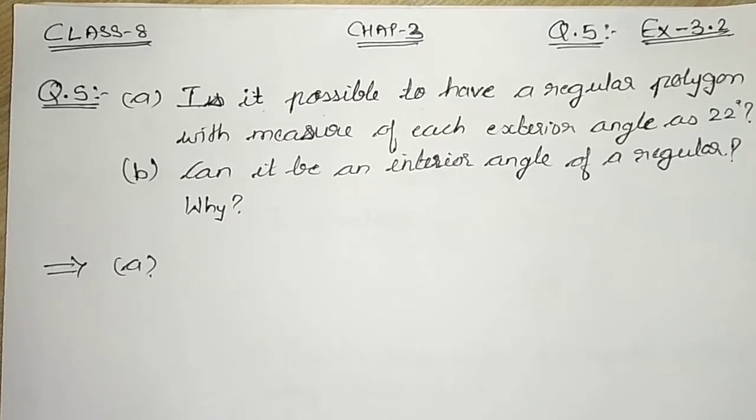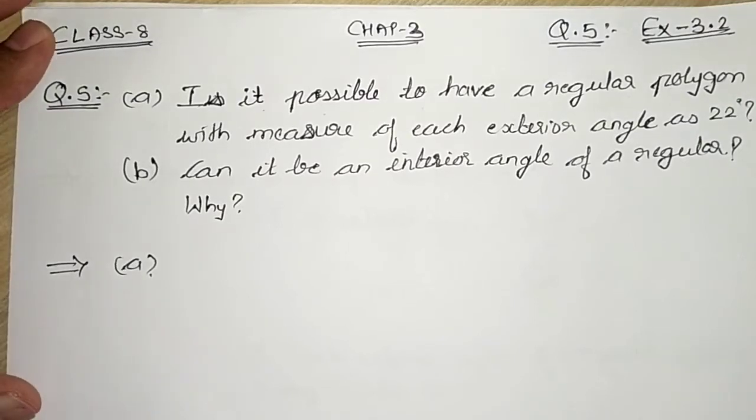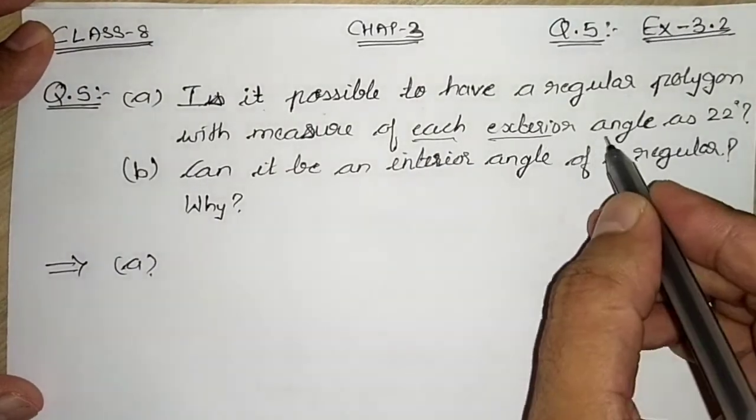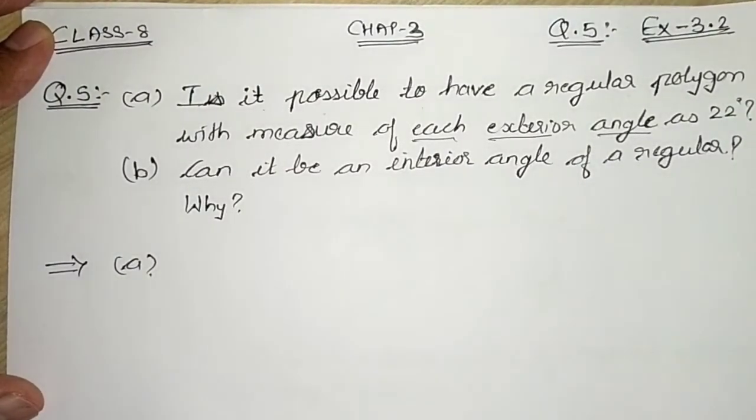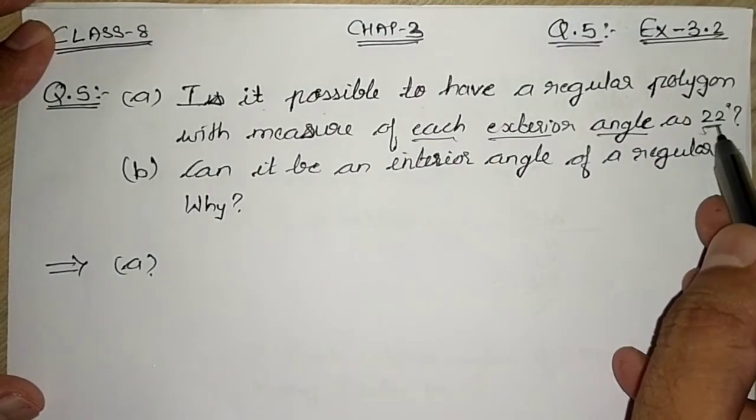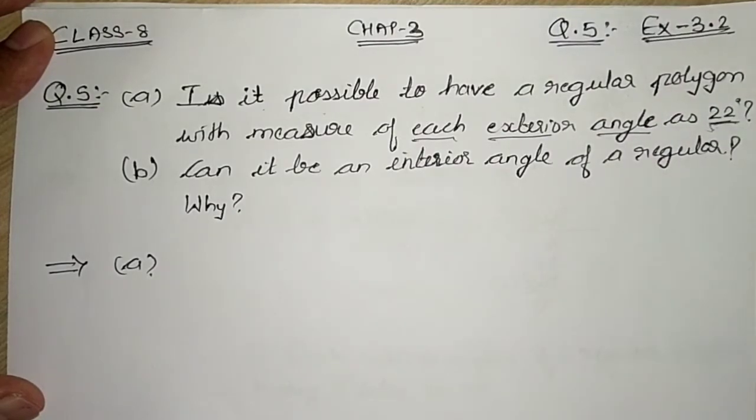Part A says, is it possible to have a regular polygon with measure of each exterior angle as 22 degrees? Students, whenever they have given you this type of question, where they have given you each exterior angle and you have to find whether it is possible to have a regular polygon with that degree, what you will do? You will find the number of sides.